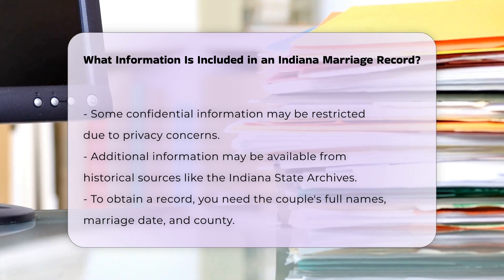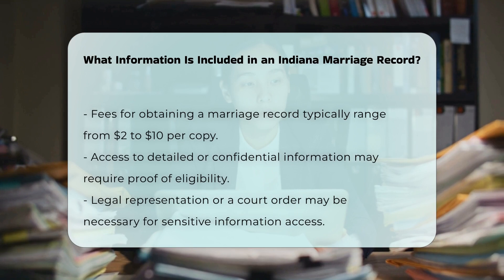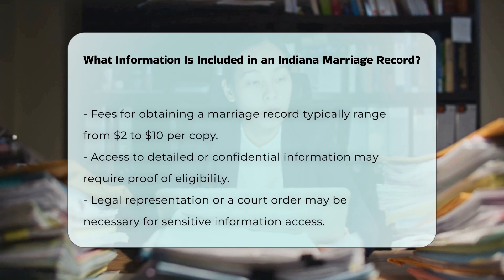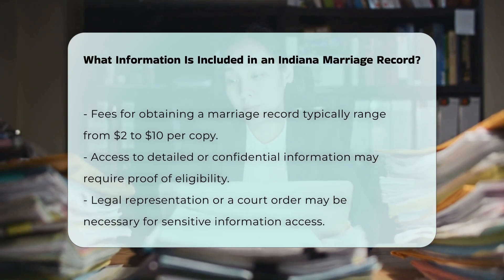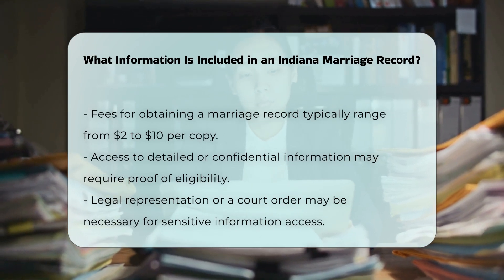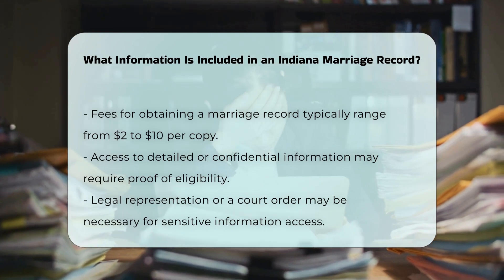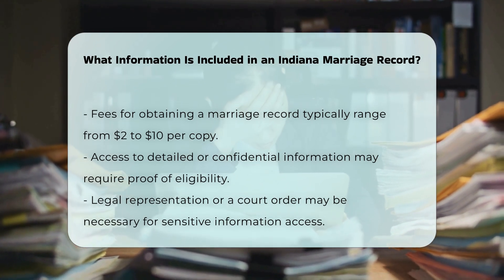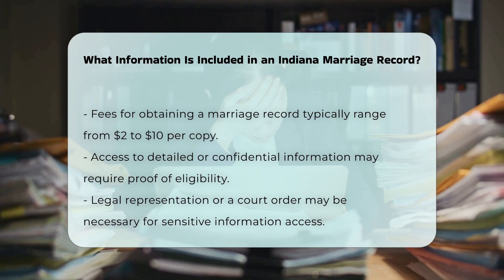Fees and procedures. To obtain a marriage record, you typically need to provide the full names of the couple, the date of the marriage, and the county where it occurred. You may also need to pay a fee, which varies by county, but usually ranges from two to ten dollars per copy.